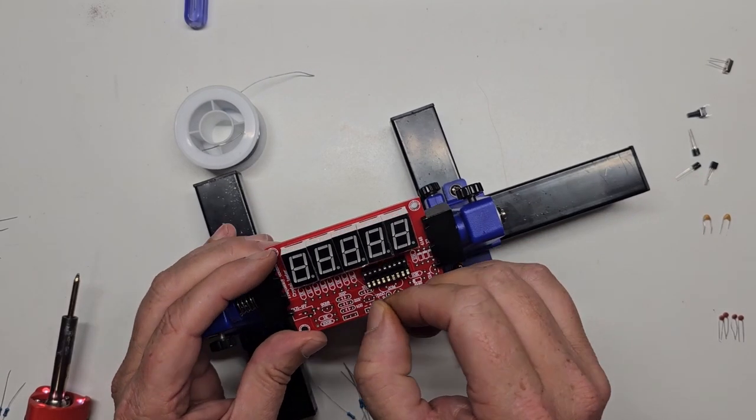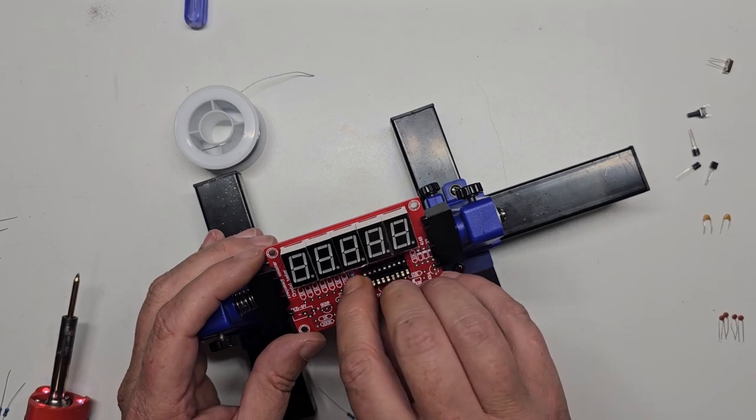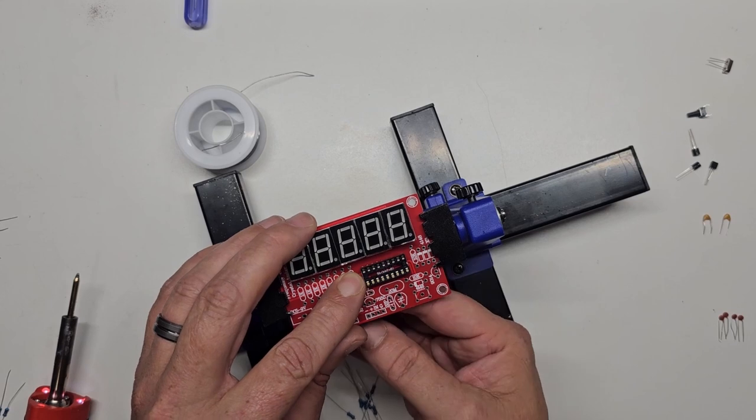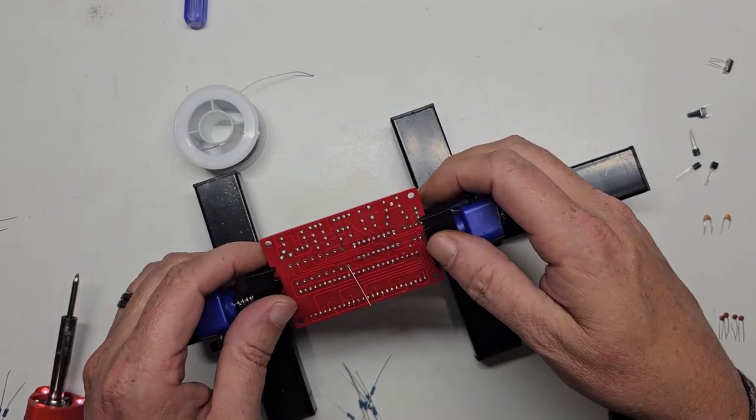Moving on to the row of 1K resistors. You can use the color codes or use an ohm meter to verify the correct value. I bend each leg into shape, insert it into the holes and then while holding it in place slightly bend the leads so it stays in place.